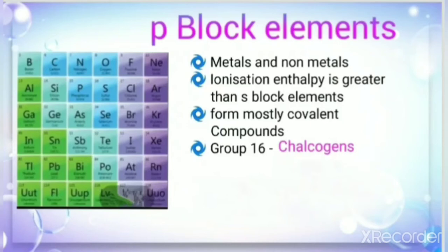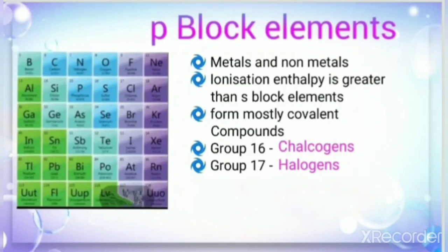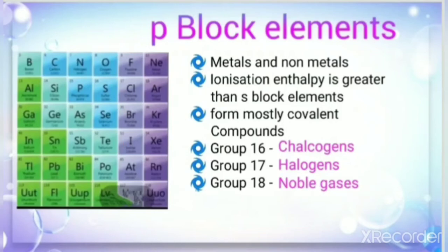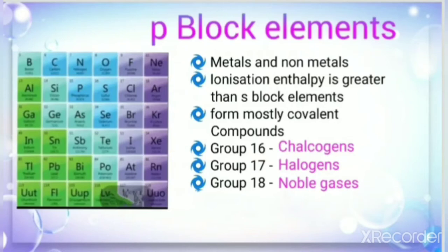Group 16 elements are called chalcogens — the oxygen family: oxygen, sulfur, selenium, tellurium, polonium. Group 17 elements are called halogens: fluorine, chlorine, bromine, iodine. Group 18 elements are called noble gases; they have completely filled orbitals, their octet is complete, so they are stable and exist in monoatomic form. Examples include neon, argon, krypton, xenon, radon, and helium.